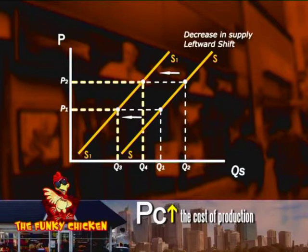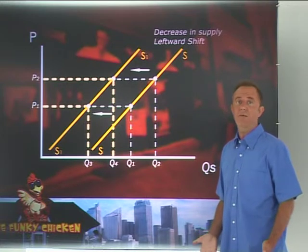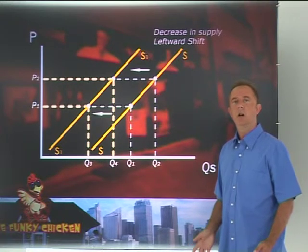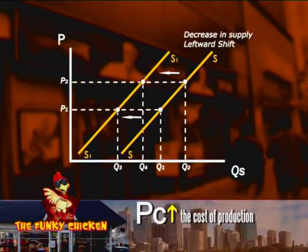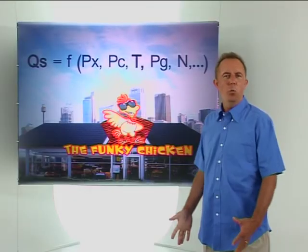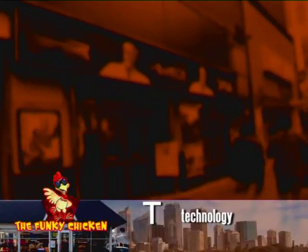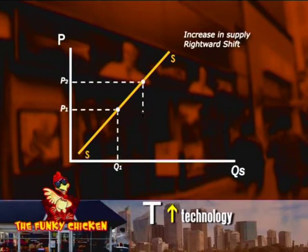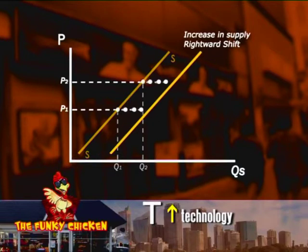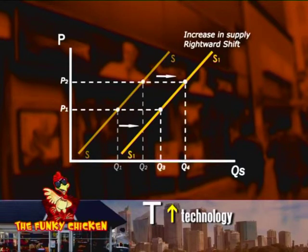This is a leftward shift of the supply curve. We can see, as we did with our demand curve, that any factor other than the price which causes a change is represented by a shift of the curve, as opposed to a movement along the curve. So what happens to our supply curve if new technology leads to an improvement in our productivity? An increase in productivity means that at each price the funky chicken can supply more than before, so the supply curve shifts to the right. An increase in supply is represented by a rightward shift of the supply curve.